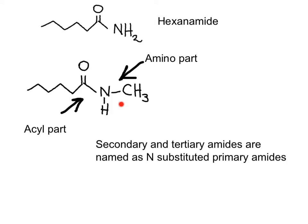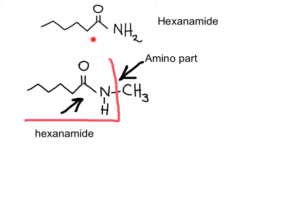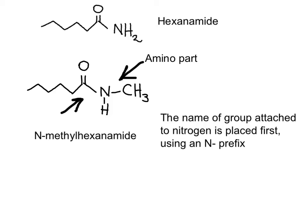When naming a secondary or tertiary amide, the substituents on the nitrogen will be named first. The rest of the molecule — the part attached to the carbonyl — will be named as if it is a primary amide. We see the molecule of hexanamide to compare with the secondary amide. We observe that this nitrogen has a substituent, but the family name corresponds to hexanamide. The full name of the substance is N-methylhexanamide.